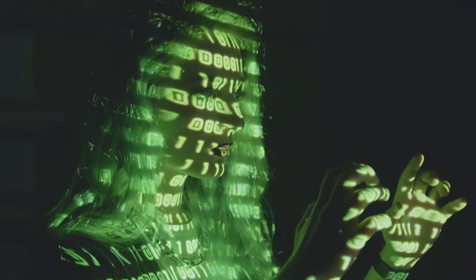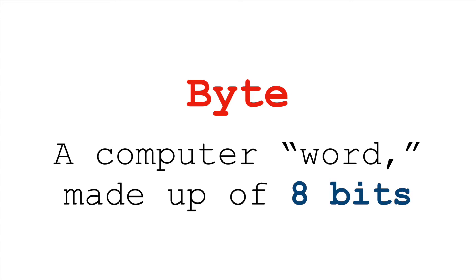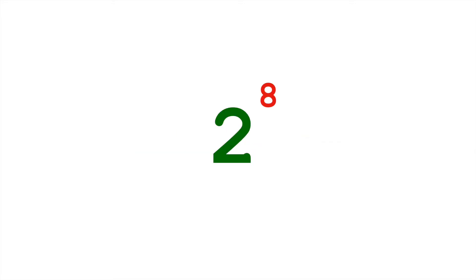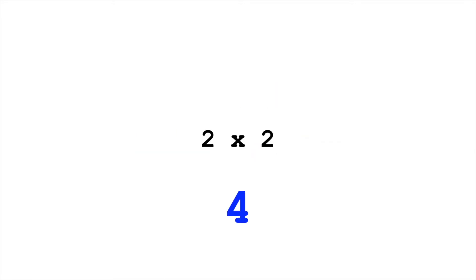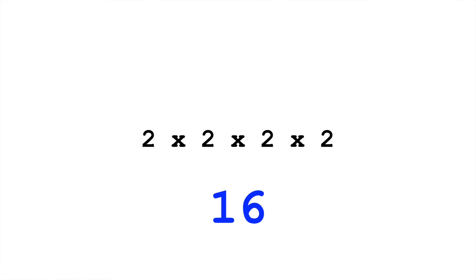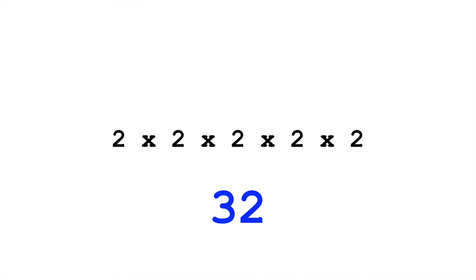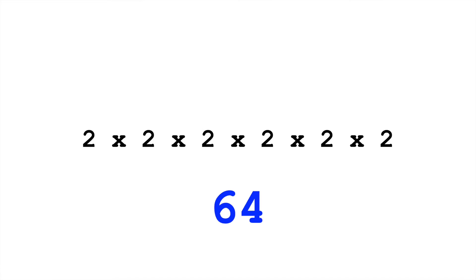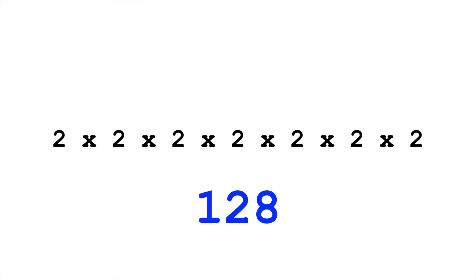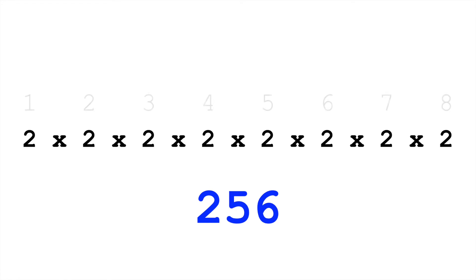MIDI messages consist of two or three bytes. A byte is a digital word made up of eight bits. So from what we know, how many different values can a byte — an eight-digit binary number — represent? 2 to the 8th: 2×2 is 4, ×2 is 8, ×2 is 16, ×2 is 32, ×2 is 64, ×2 is 128, ×2 is 256.